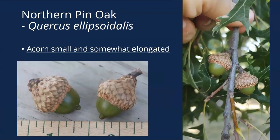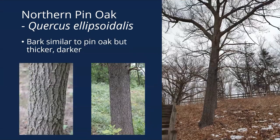The acorn is small and somewhat elongated with a heavier cap, and this differs a lot from scarlet oak with those flattened acorns — this is an elongated acorn, scarlet oak has a flattened acorn, that's the best way to tell them apart. Bark is similar to pin oak, a little thicker and darker than pin oak, a little thinner than scarlet oak, but it holds onto those lower dead branches as well.